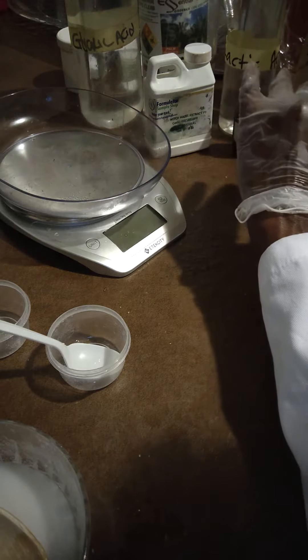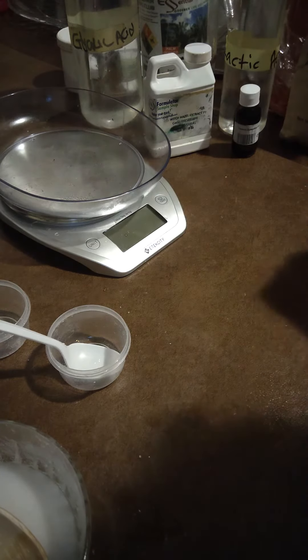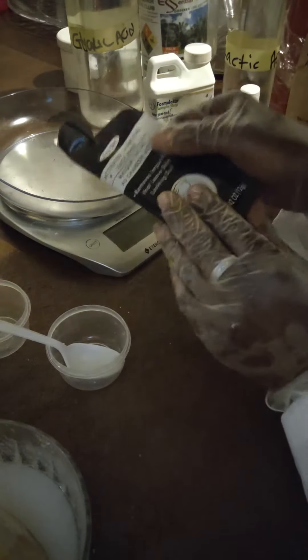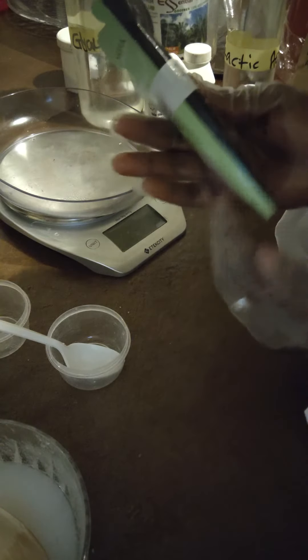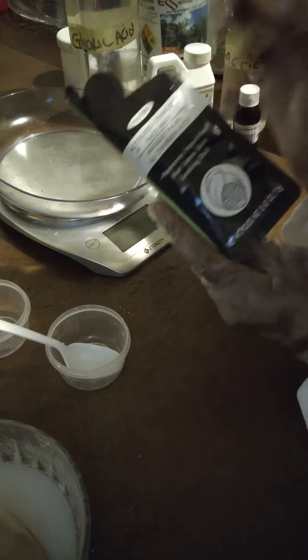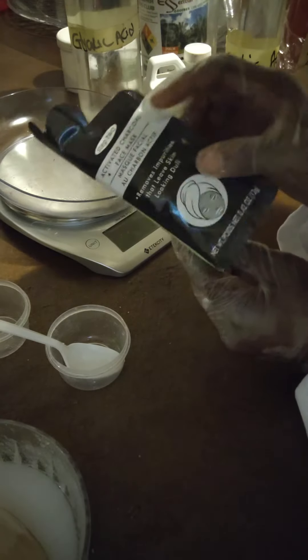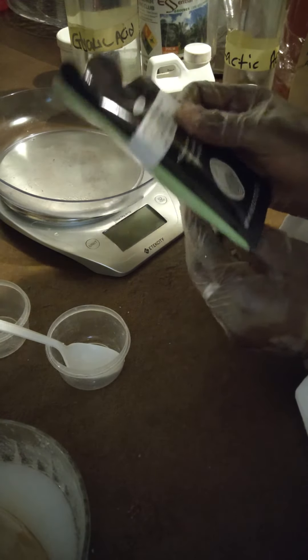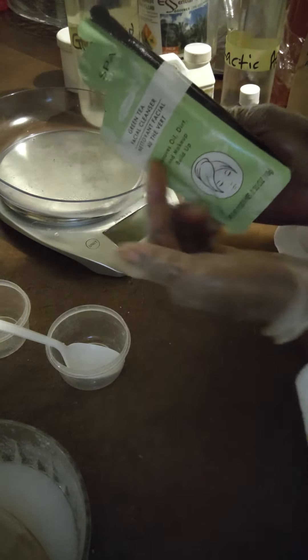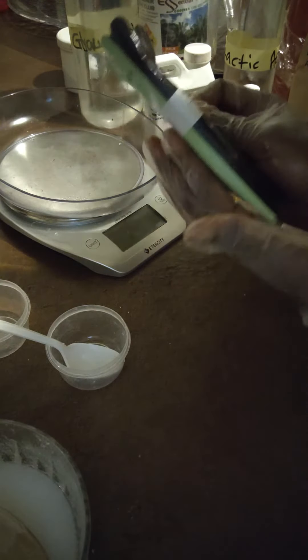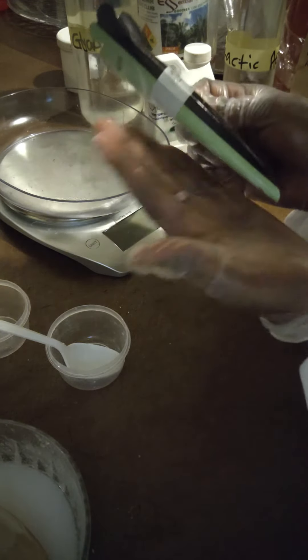The skin is in different layers - you have the top layer, the middle layer, and the deeper layer. The AHA acid works on the top layer and removes it, while the BHA acids go deeper and work on the middle or dermal layer.